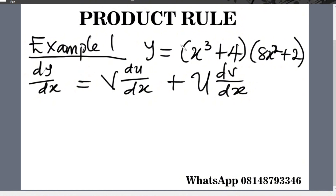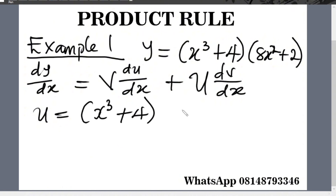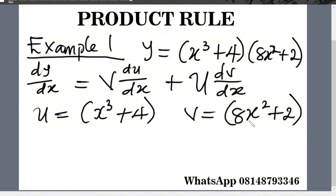Since y equals (x cubed plus 4) multiplied by (8x squared plus 2), what is v and what is u? u is the first term in brackets and v is the second set of terms in brackets. So u equals x cubed plus 4, and v equals 8x squared plus 2.